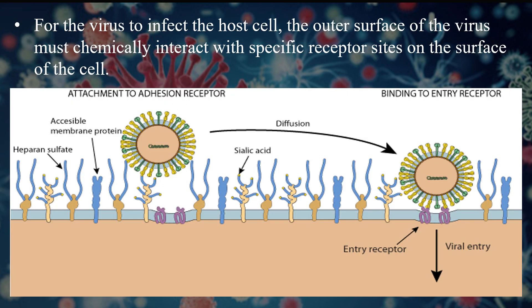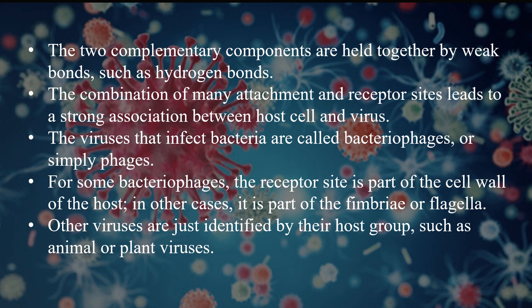For the virus to infect the host cell, the outer surface of the virus must chemically interact with specific receptor sites on the surface of the cell. When multiple host cell receptors bind to multiple virus surface structures, it results in a strong association between the two. The viruses that infect bacteria are called bacteriophages, or simply phages. For bacteriophages, the receptors may be present on the bacterial cell wall, fimbriae or the flagella.